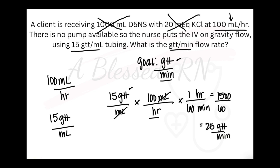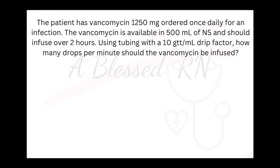One last example to see another way it could be worded. The patient has vancomycin 1,250 mg ordered once daily for an infection. The vancomycin is available in 500 mL of normal saline and should infuse over 2 hours. Using tubing with a 10 drops-per-mL drop factor, how many drops per minute should the vancomycin be infused?